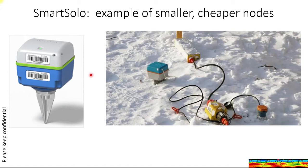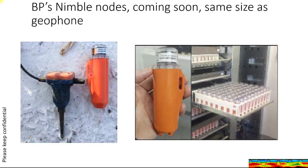Pretty soon there will be some other hardware available. This is BP's Nimble node, and it's about the size of a geophone. It also contains battery, recording unit, GPS, and an accelerometer. You can see it can be held in your hand very easily. This will allow number of channels to go up to 100,000 and possibly even more, and it especially allows for more creative acquisition.